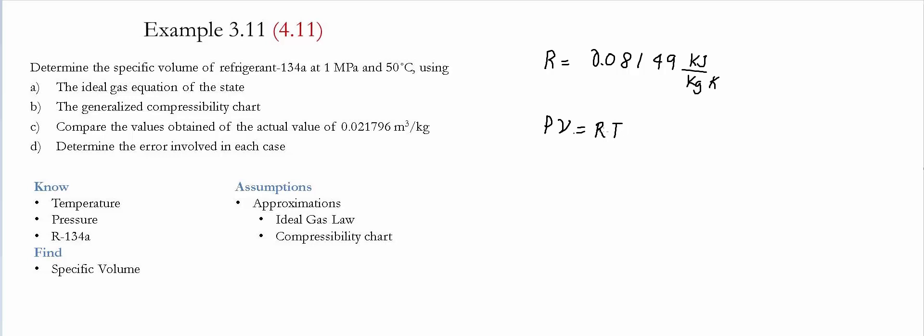We're going to use ideal gas law. PV equals RT, and solving for the specific volume we find that it's RT divided by the pressure. The pressure for our case is 1 times 10 to the 3 kilopascals and the temperature in Kelvin is 50 plus 273, which equals 323 Kelvin.